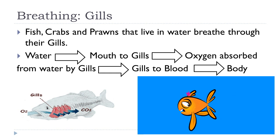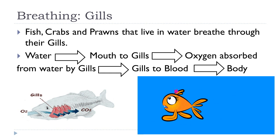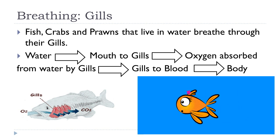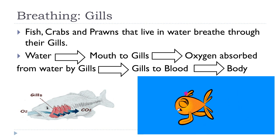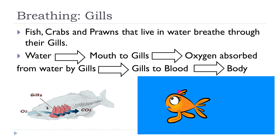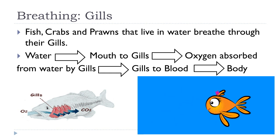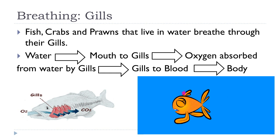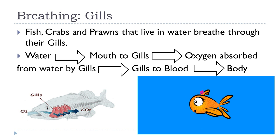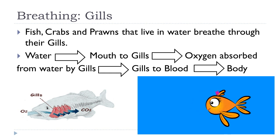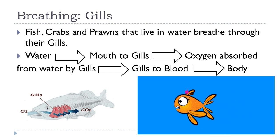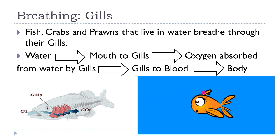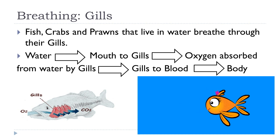Animals like fish, crabs, and prawns that live in water breathe through their gills. Gills are feathery organs present on each side of the head of the animal. Gills have a rich supply of blood. During water flow, oxygen dissolved in water is absorbed, and carbon dioxide from the blood is released into the water that goes out of the body.